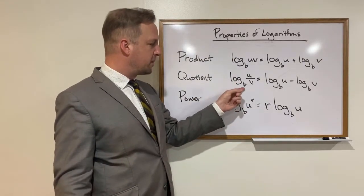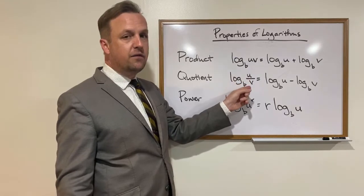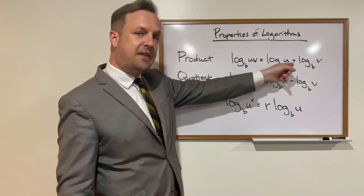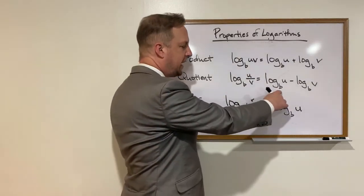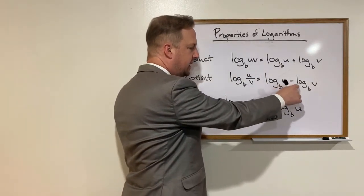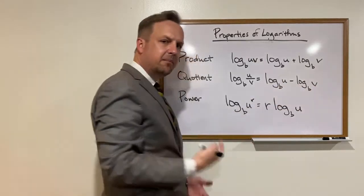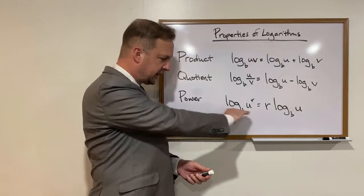Quotient rule, same thing. Log base b of u over v, or u divided by v, instead of adding, we're just going to subtract. So log base b of u minus log base b of v. And you'll see again in a minute how that works.